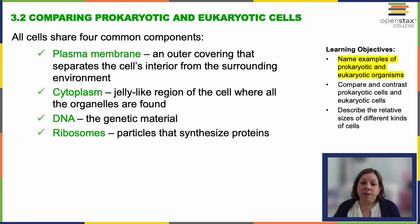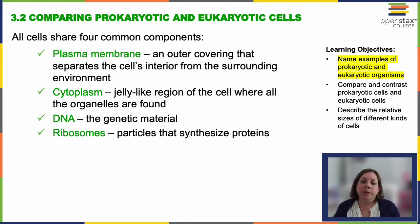Bacteria and archaea are our examples of prokaryotic organisms. And then animals, plants, fungi, and protists — those are our eukaryotic organisms.